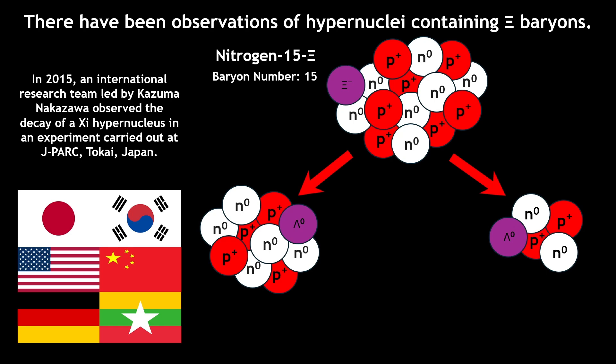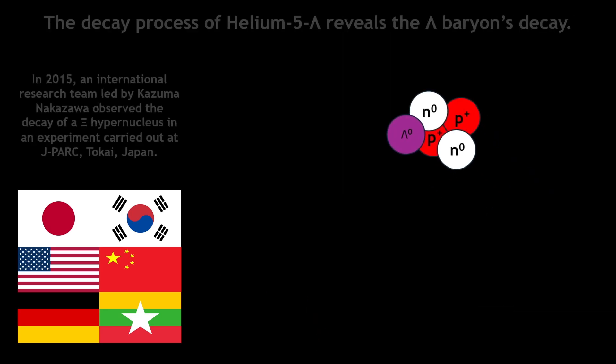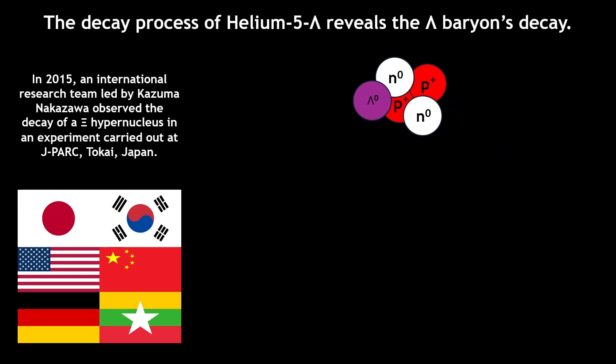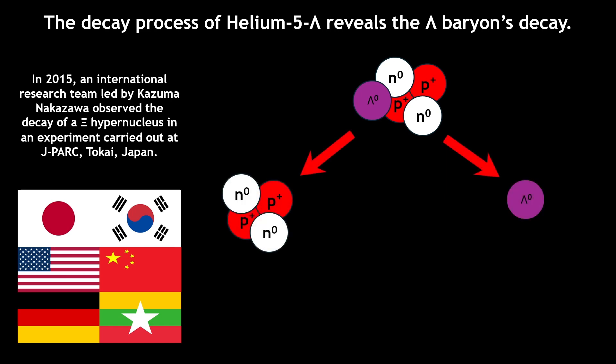While the beryllium hypernucleus decays into several nuclei and several neutrons that went untracked, the helium-5 lambda has a far more interesting decay pattern. The helium hypernucleus decays into a typical helium-4 nucleus, a negative pion, and a proton.